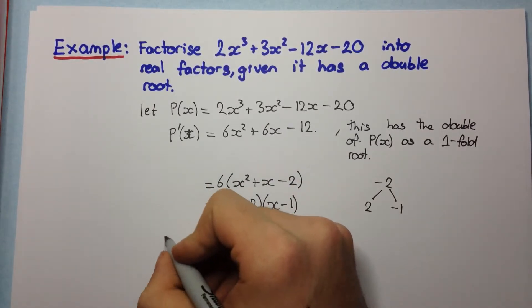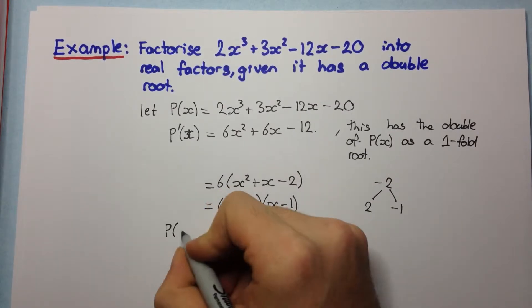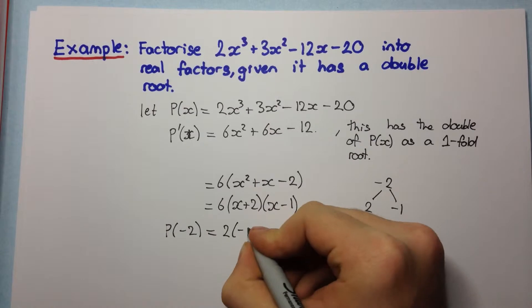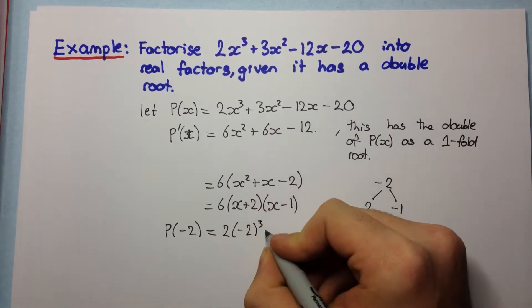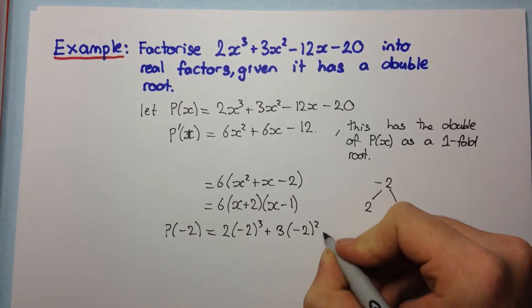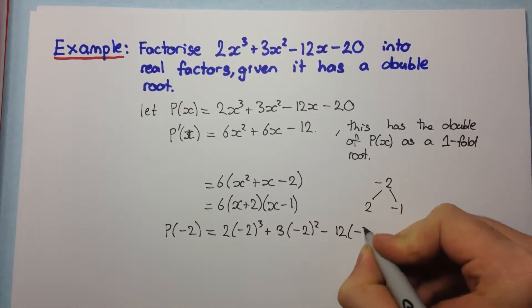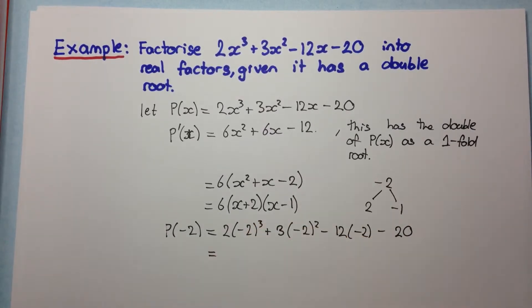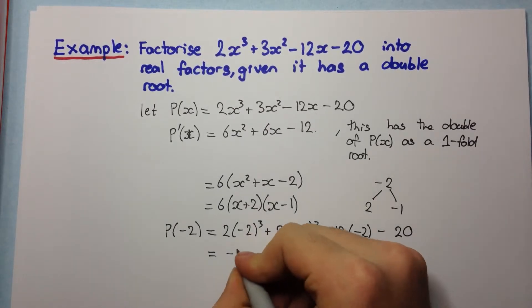So, testing P(-2), that will give us 2 into (-2)³ + 3 into (-2)² - 12 into (-2) - 20. This here is -2 cubed, which is -8 times 2, that's -16.